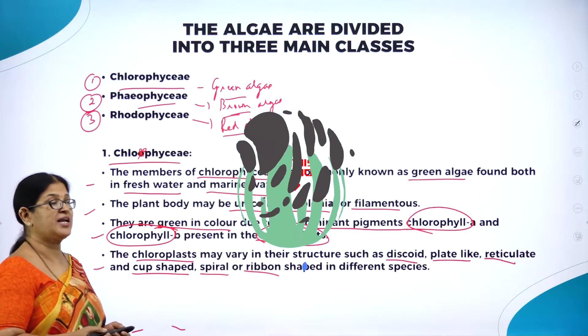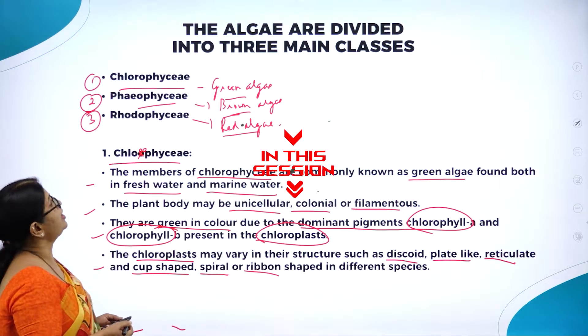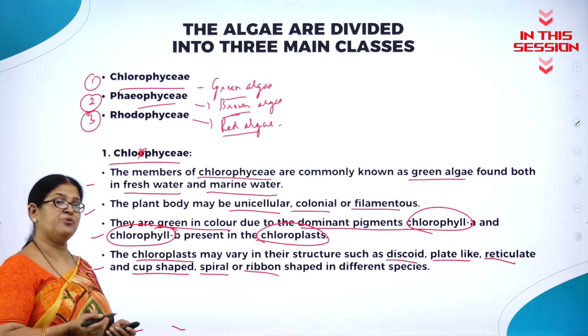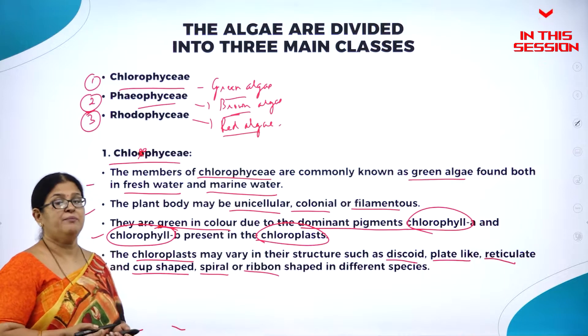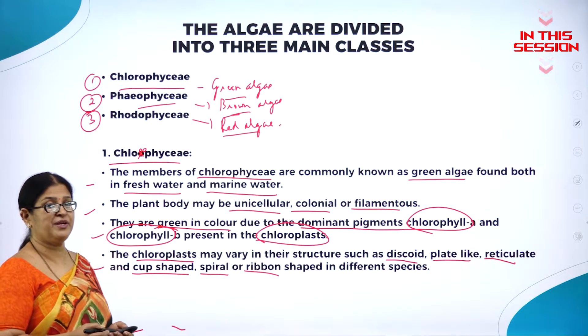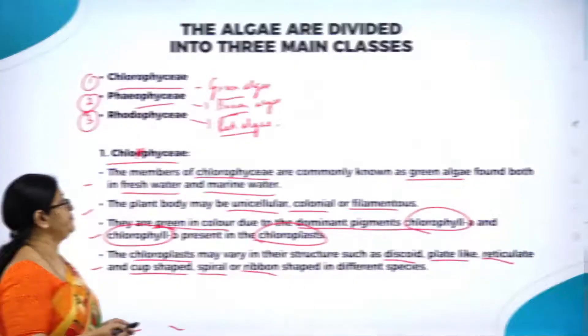The algae have been broadly classified into Chlorophyceae, Phaeophyceae, and Rhodophyceae, based on the type of coloring pigment found in them.